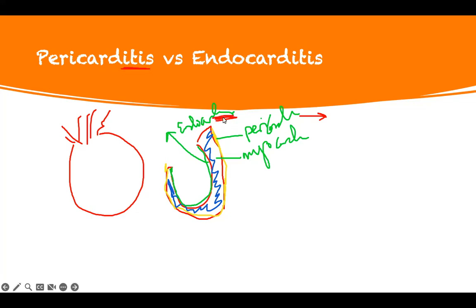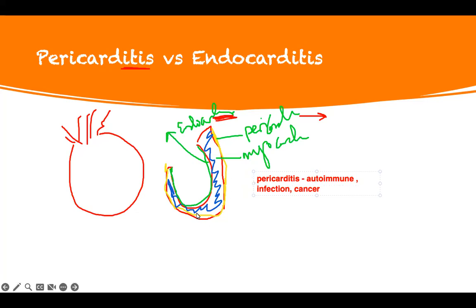If the endocardium is affected, it's endocarditis. It can be an autoimmune problem — usually the pericarditis. It can be an autoimmune problem, or it can be sometimes infection — some viral infection or cancer. Any of them can cause inflammation and cause the problem.